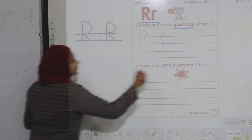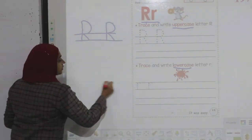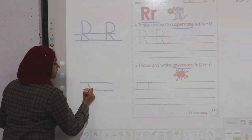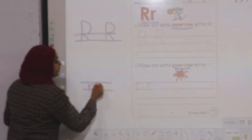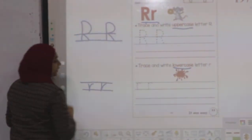How do I write the lowercase R? Down, stick, up, and curve. Down, stick, up, and curve.